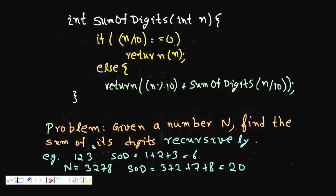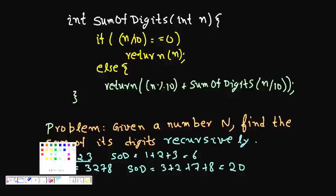This is a simple piece of code that can find the sum of the digits of a given number, regardless of how many digits it has. The problem is: given a number n, find the sum of its digits recursively. For example, if the input is 123, the sum is 1+2+3=6. If the number is 3278, the sum is 3+2+7+8=20.